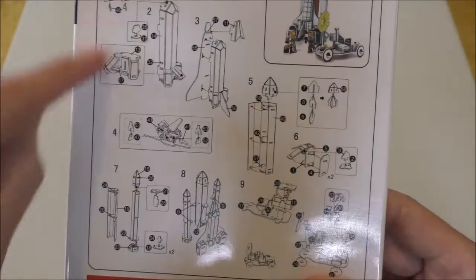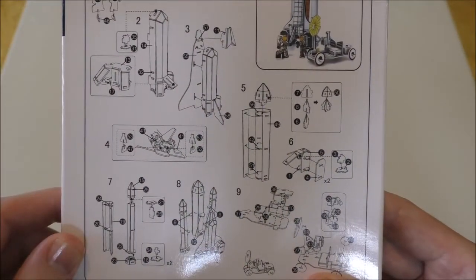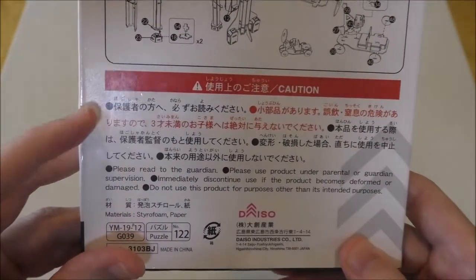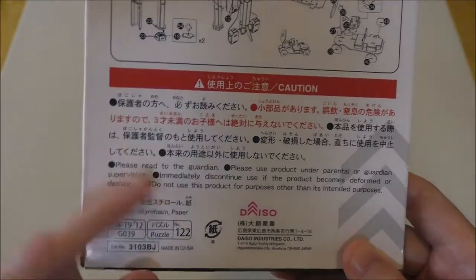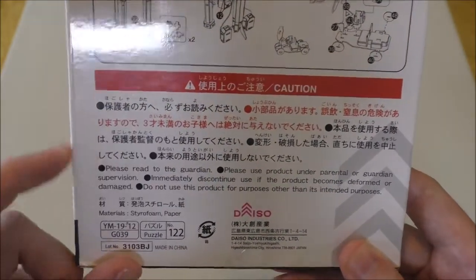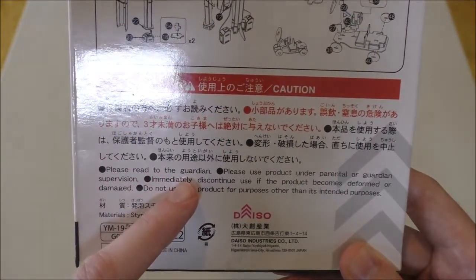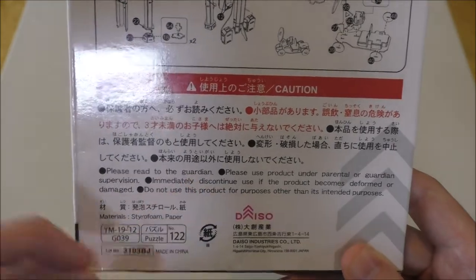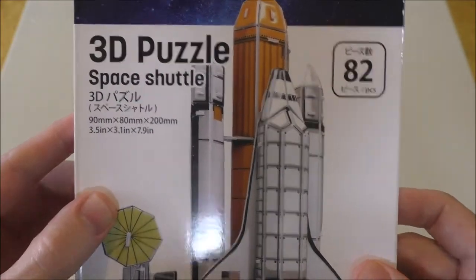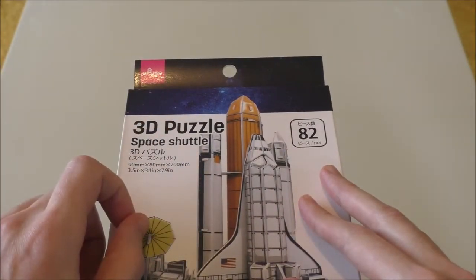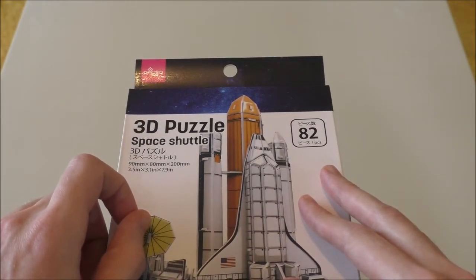But it does have the instructions printed on the back. It's nice that they have this Japanese and English on all of them, although the English is sometimes not so great. Please read to the Guardian. You've got to read this to your Guardian, whoever that may be. But without further ado, let's find out what's inside the box.